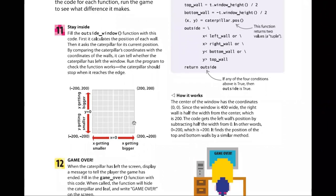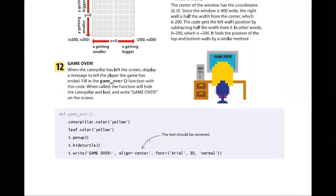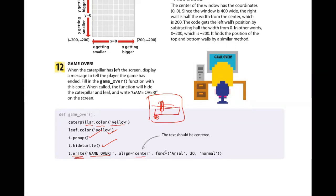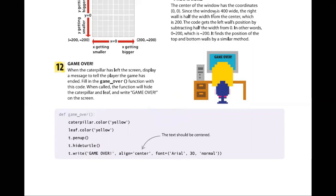The game_over function: set caterpillar.color('yellow') — it becomes indistinguishable from the yellow background and effectively invisible. Set leaf.color('yellow') similarly. Then t.penup(), t.hideturtle(), and finally t.write('Game Over', align='center') — so 'Game Over' appears in the center of the screen. Everything turns yellow and invisible except for the Game Over text.